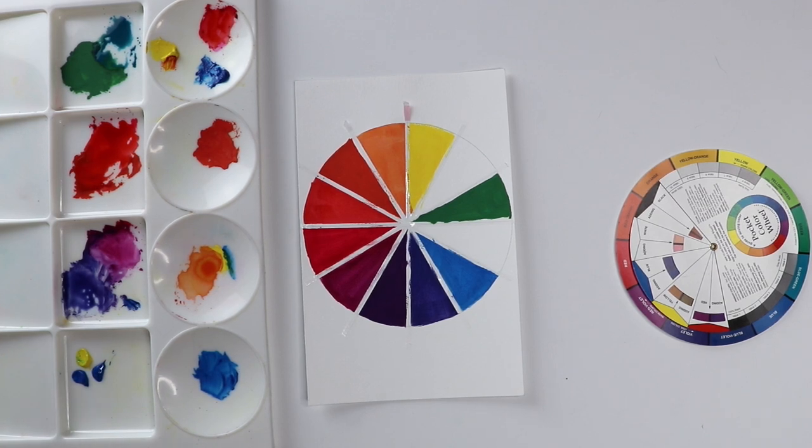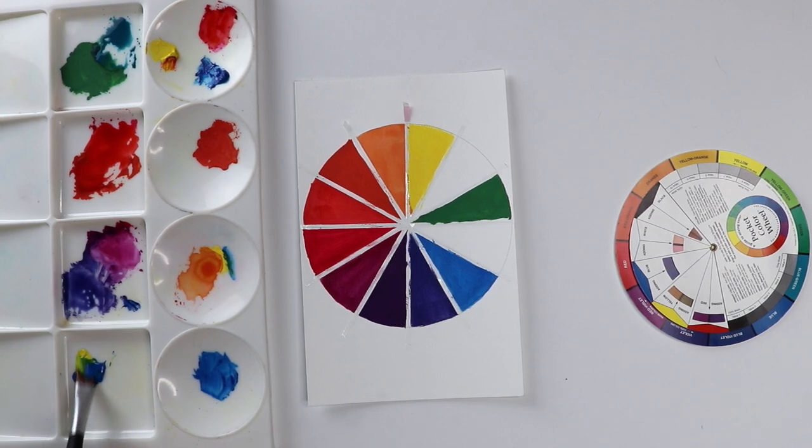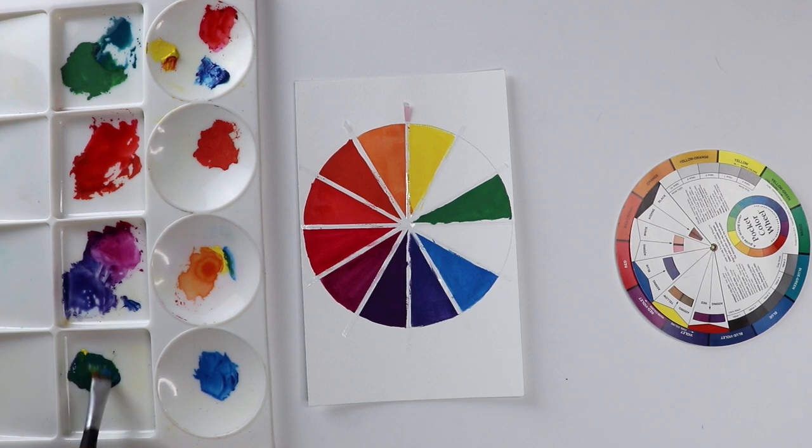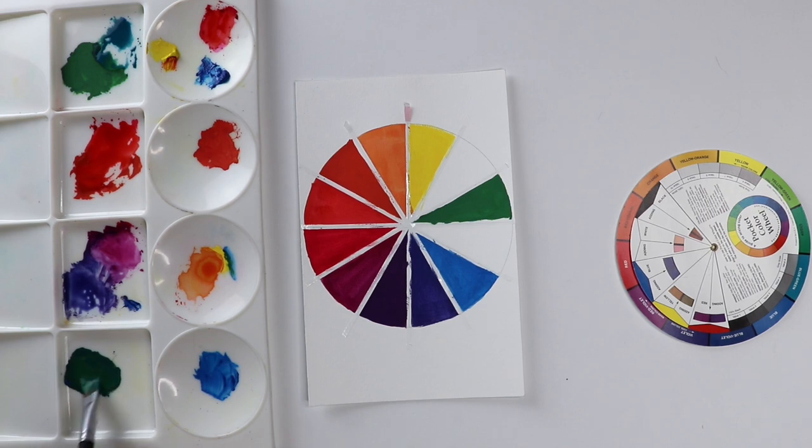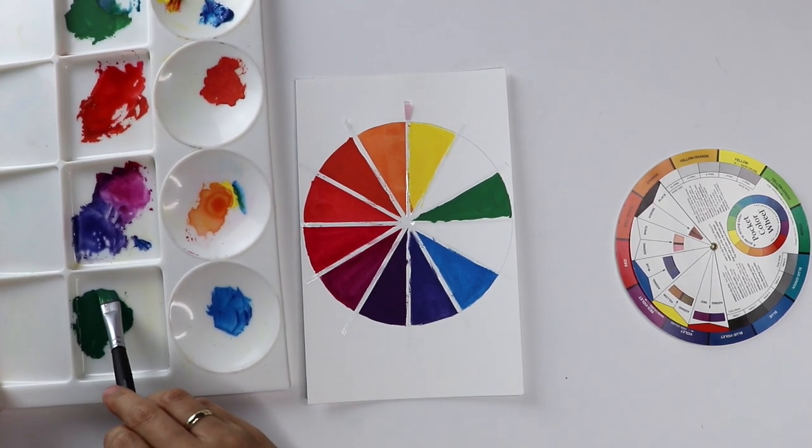The next step would be to mix and paint in the secondary colors. A secondary color is the mixture of two different primary colors of the same amounts. In the color wheel, it should go into the second segment clockwise from yellow or counterclockwise from blue. In the same way, you can get the other two secondary colors: orange and violet.